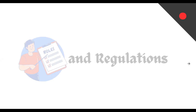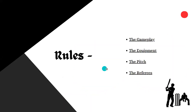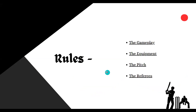There are four main rules that govern the game: gameplay, the pitch, the equipment, and the referee. Cricket is a bat-and-ball game played between two teams of 11 players, as I have mentioned before.